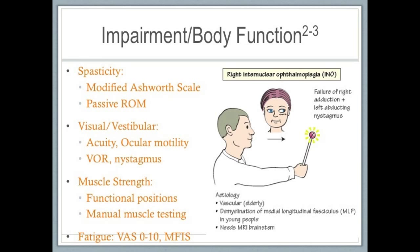In terms of impairment and body function limitations, spasticity is often present in people with MS and should be tested. Though the modified Ashworth scale does not have great psychometric data, it is still often used clinically to grossly identify if and to what extent spasticity is present. Passive range of motion can aid in understanding how spasticity impacts movement. Spasticity is often present in knee extensors, knee flexors, ankle plantar flexors, and hip adductors, but may be present elsewhere.